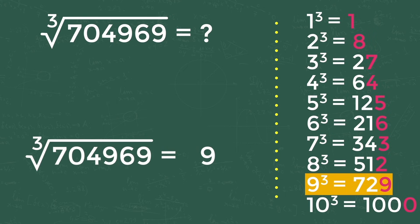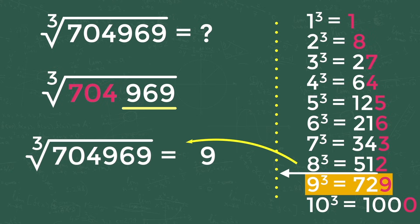The first part is 969 and second part is 704. We need not perform any action on the first part; all we need to work is on the second part. In this problem, second part is 704 and it is between 8 cube and 9 cube values, that is 512 and 729. So write 8 in the answer, as cube 8 is 512 and cube 9 is 729.